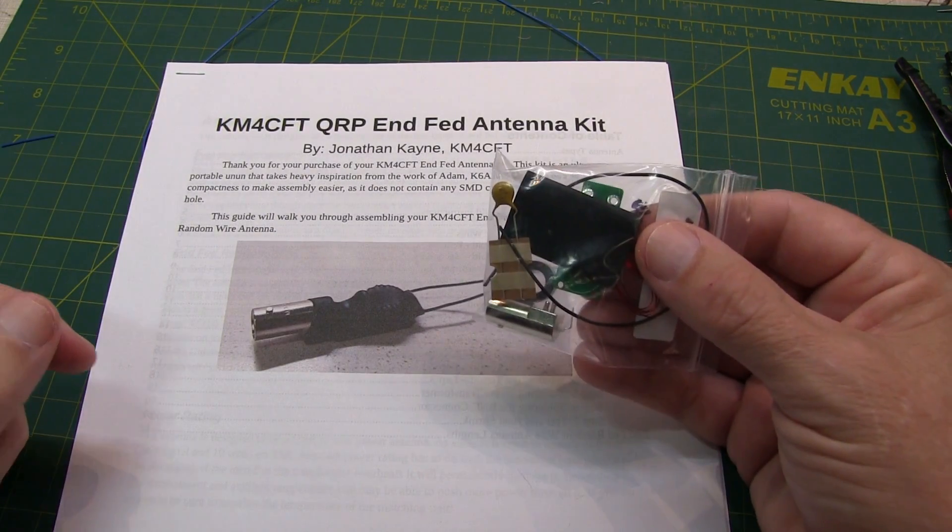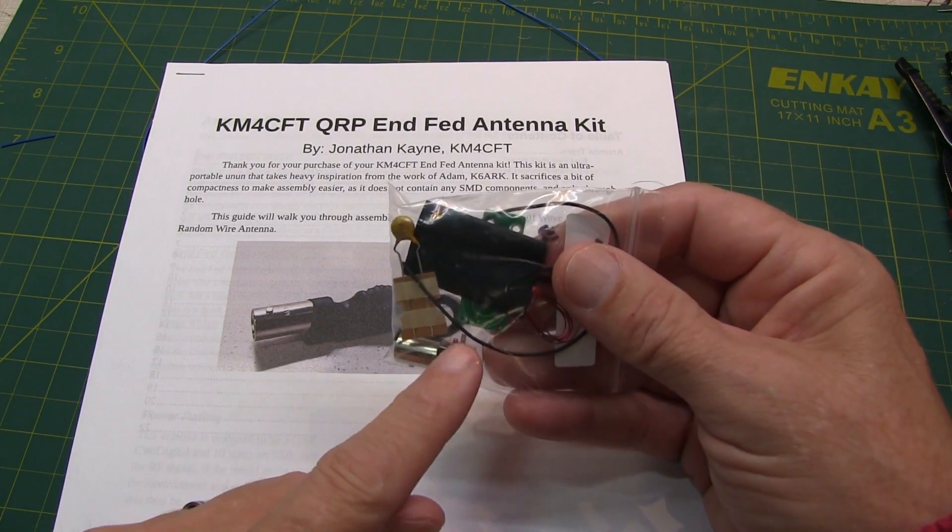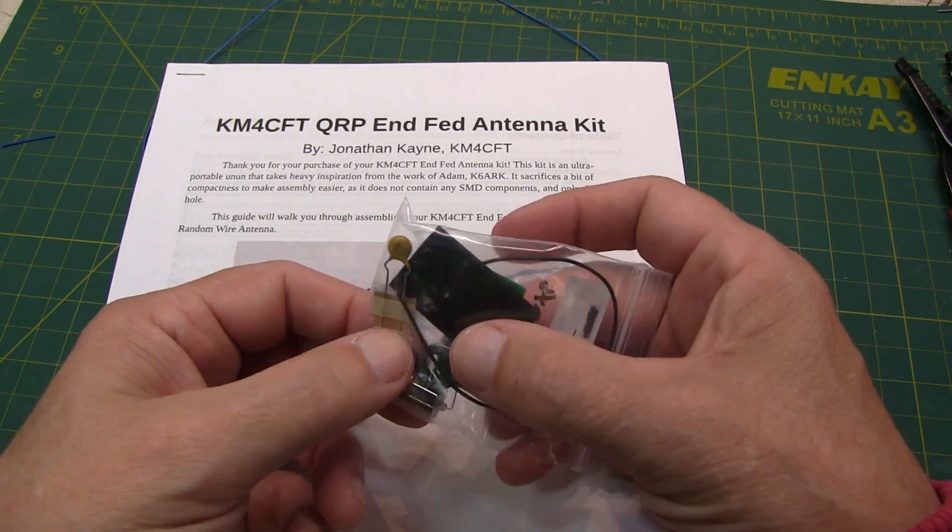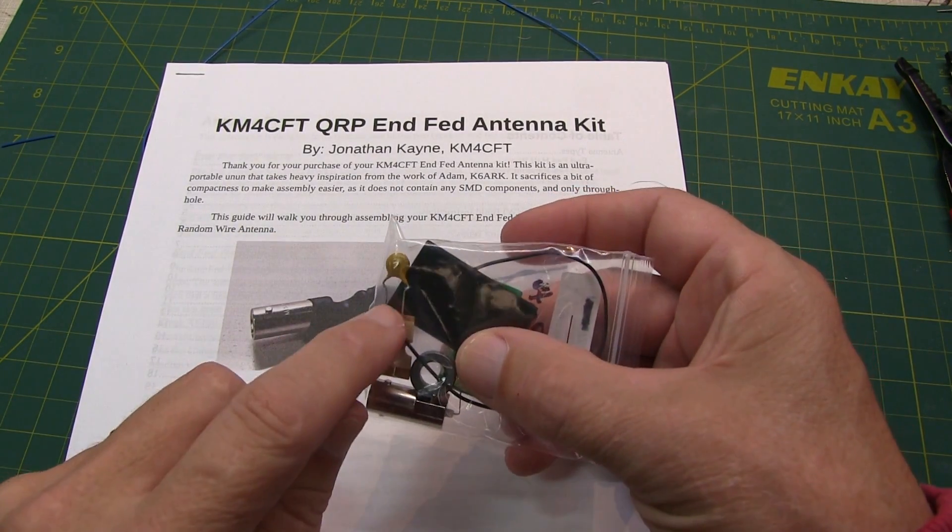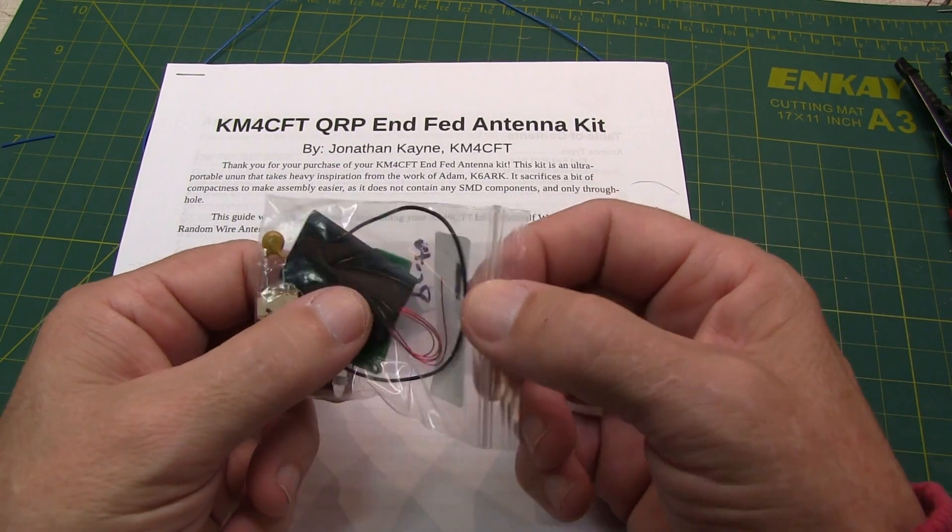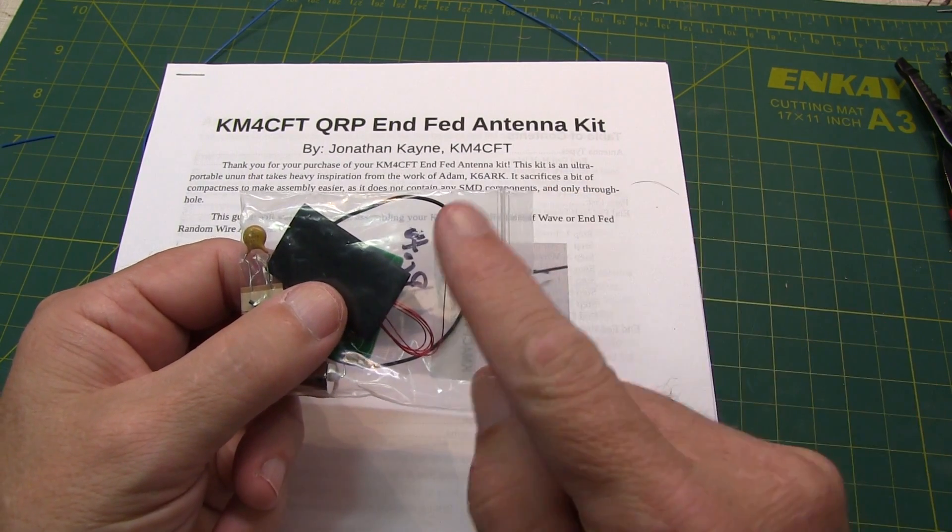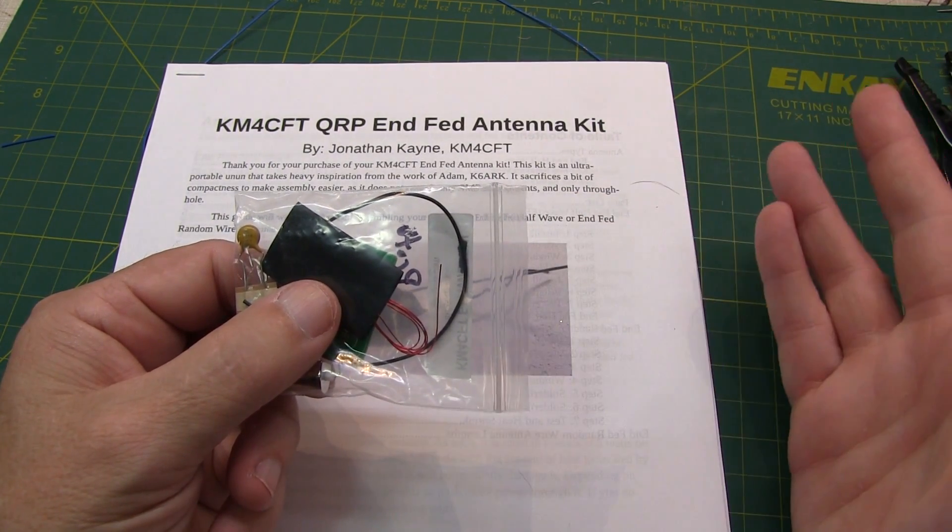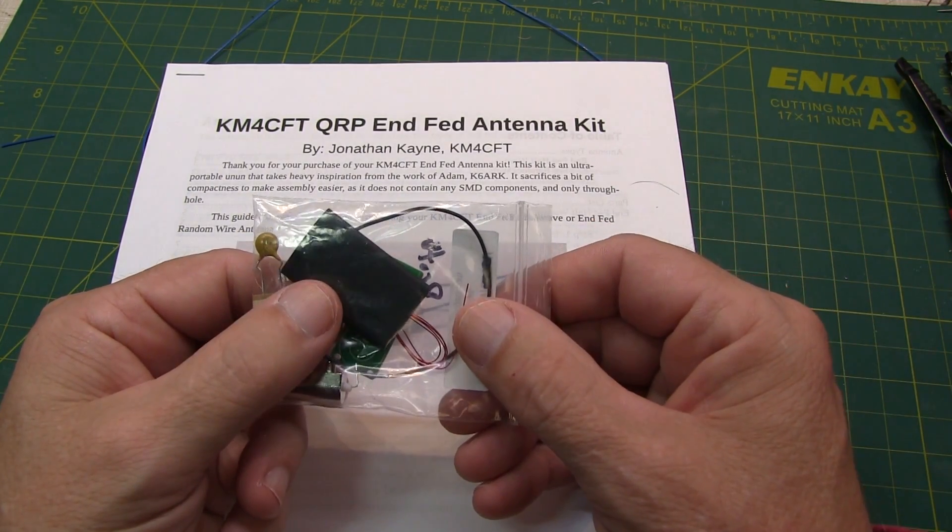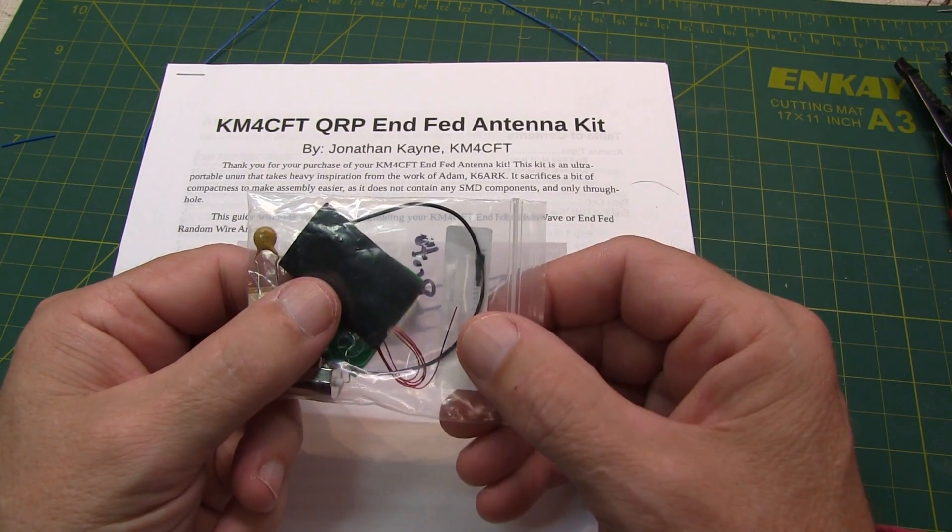The kit contains basically what you need to build what's shown in the image. It's the BNC connector, a small printed circuit board, a FT50-43 toroid capacitor, magnet wire and a small length of stranded wire. It does not include the wire to make the antenna itself because you can decide how long of an antenna you want to make for what band, whether it's going to be an NFED half-wave antenna or an NFED random wire.